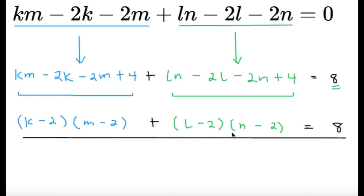Using factoring by grouping, I can factor the blue expression as K times (M minus 2) minus 2 times (M minus 2), which gives (K minus 2)(M minus 2). We do something similar for the green expression, yielding (L minus 2)(N minus 2). So the new equation is (K minus 2)(M minus 2) plus (L minus 2)(N minus 2) equals 8. This is nicer because it's symmetric — if (K, L, M, N) works, any permutation also works.